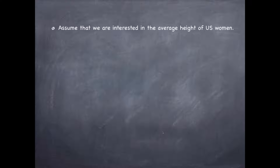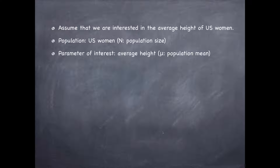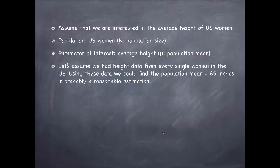Let's give an example. Assume that we're interested in the average height of U.S. women. Our population is all U.S. women, and we'll call our population size capital N. The parameter of interest here is the average height. Height is a numerical variable, so we're calculating a mean — we can call that our mu, the population mean. If we had data from every single woman in the U.S., we wouldn't need to do any more sampling from this population because we would already have the answer.